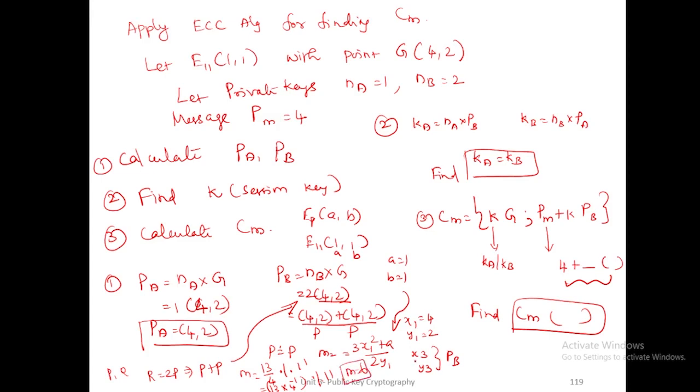After finding the slope value, you substitute it in x3, y3 calculation. The formula is x3 = m^2 - x1 - x2. Here x1 and x2 values are the same. You substitute those values and do modulus operation mod 11 to find x3. The formula for y3 is y3 = m(x1 - x3) - y1. You substitute those values and do modulus operation to find y3. That gives the points for pb. This is how we calculate pb value.